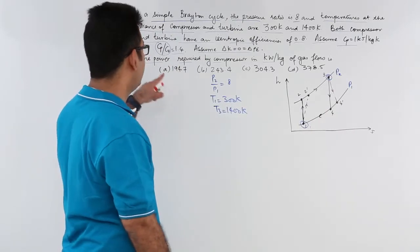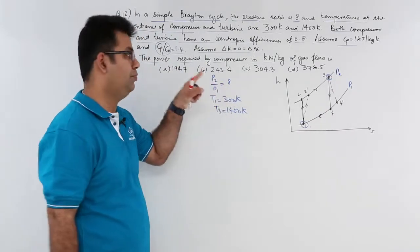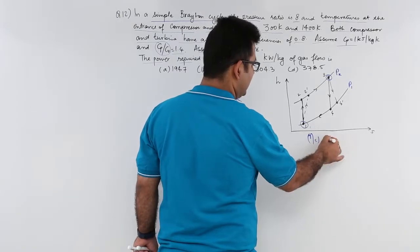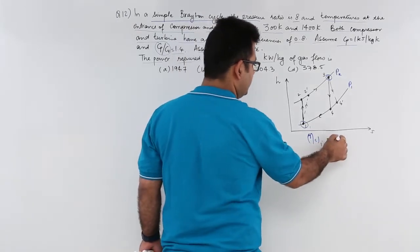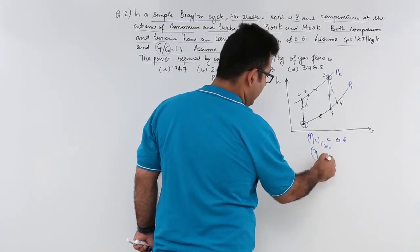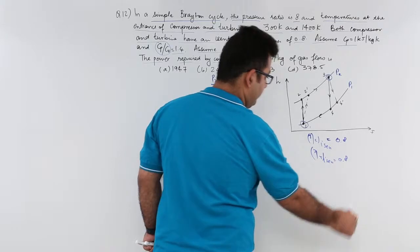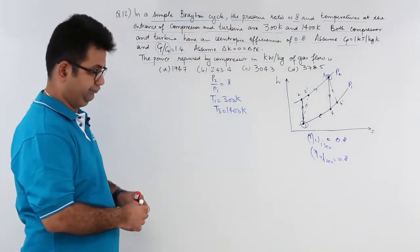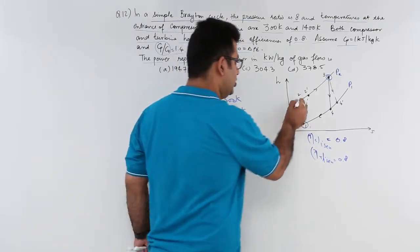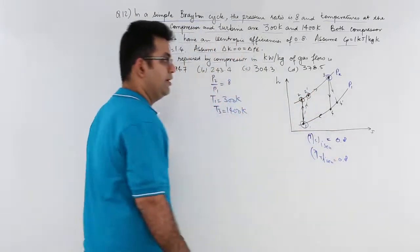Both the compressor and turbine have an isentropic efficiency of 0.8. So compressor isentropic efficiency is 0.8. Now let us find out these two temperatures.